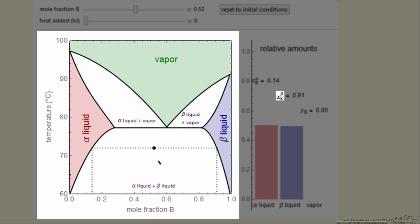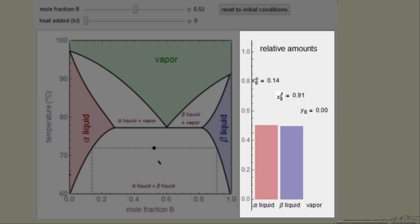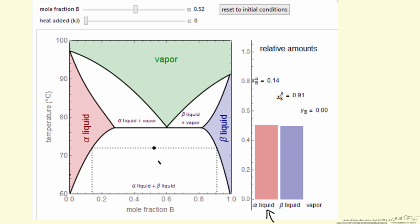I'm plotting temperature versus mole fraction on the left side. On the right side I plotted the relative amounts of the phases. The alpha phase corresponds to this region that is enriched in component A, so component B is partially miscible in component A.